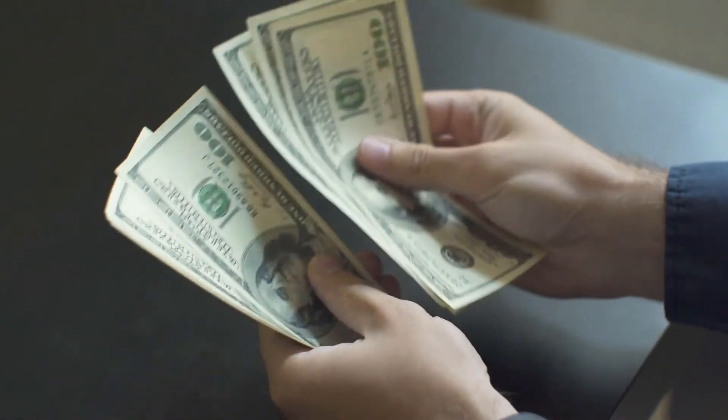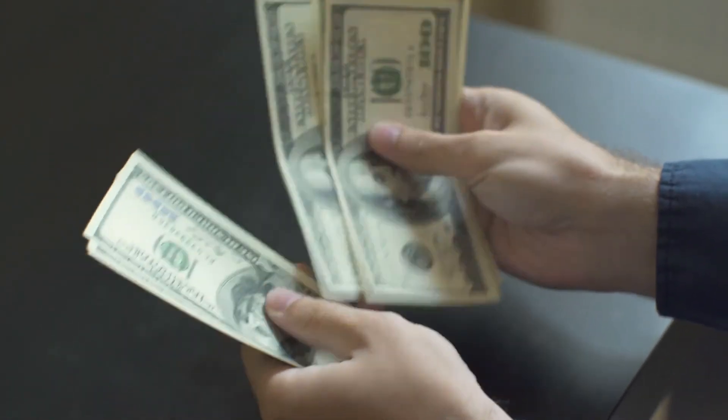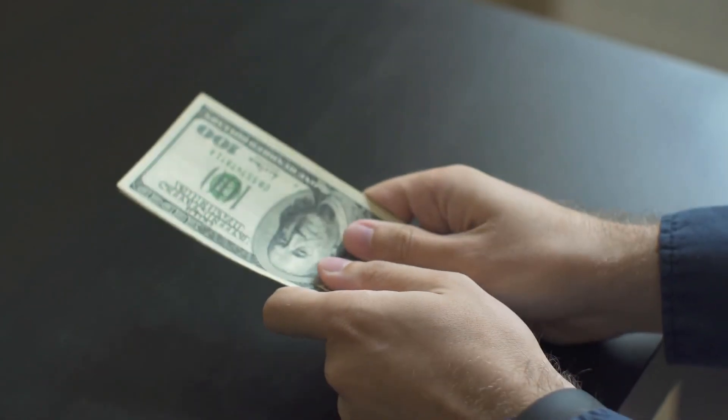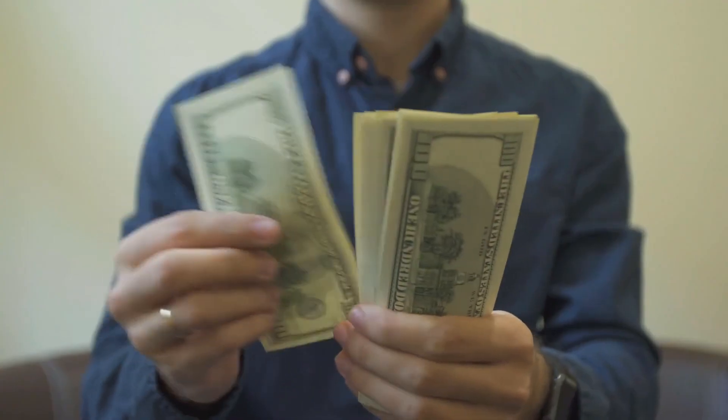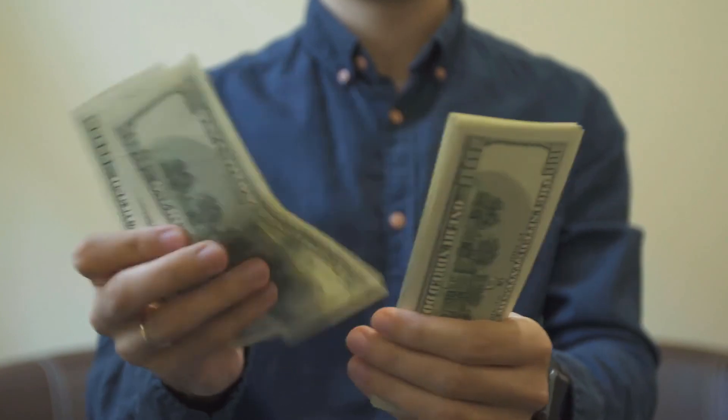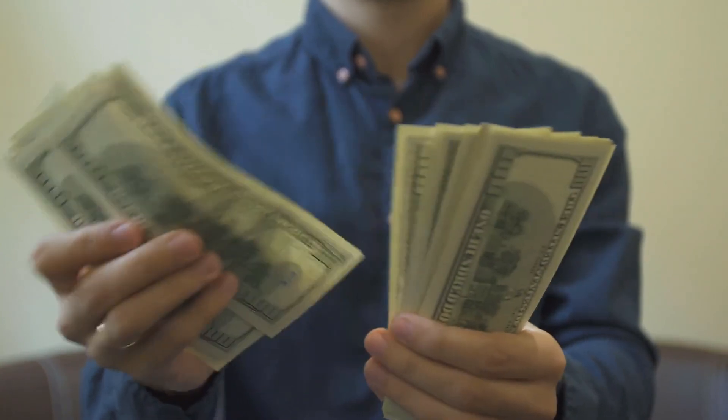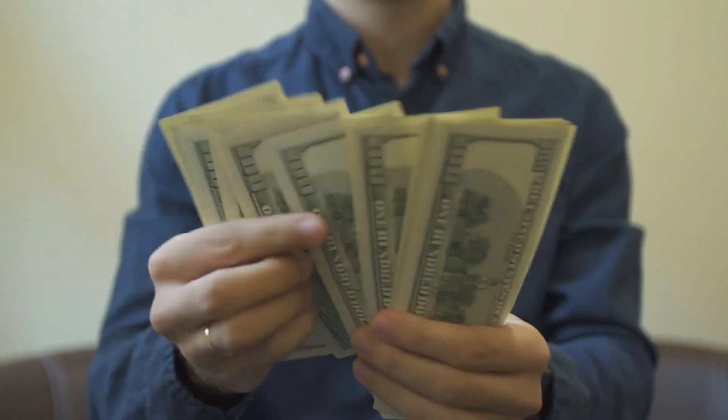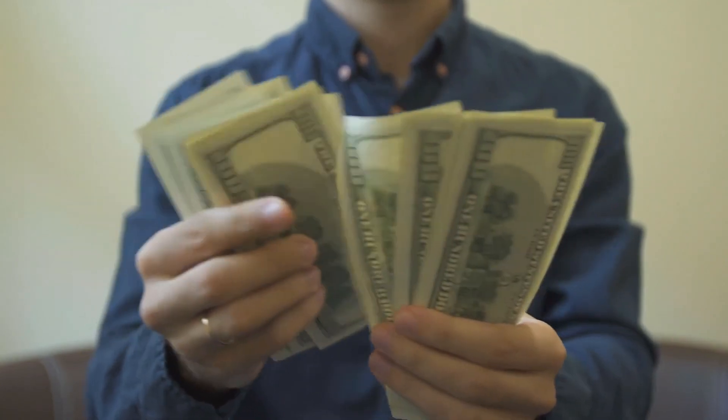According to PayScale, the average pay for someone with a bachelor's degree in mathematics is $77,200. And also according to PayScale, the average pay for someone with a bachelor's degree in applied math is $76,600. As you might expect, the average pay for both majors is very similar.